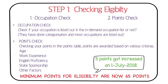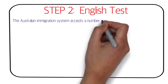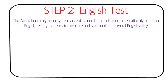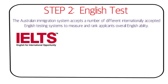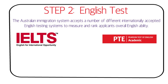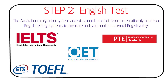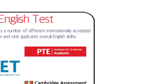Step two is the English test. The Australian immigration system accepts several internationally recognized tests: IELTS, PTE Academic, OET (Occupational English Test), TOEFL iBT, and Cambridge Assessment English (CAE). You can appear for any one of them, and based on your score, you'll be awarded points and ranked in the queue.